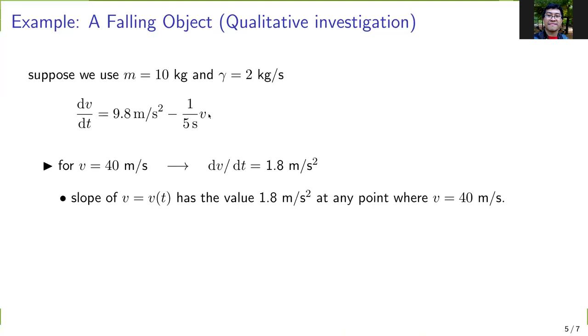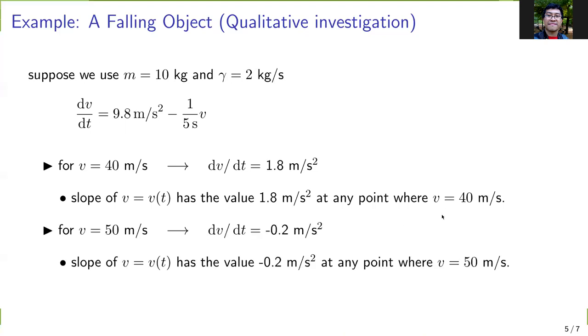Suppose we set v = 40 m/s. Then we get dv/dt = 1.8 m/s². What it tells us is that if v has a value of 40 m/s, then the slope of v would have a value of 1.8 m/s² in a plot of v versus time. That happens at any point where v is 40 m/s.